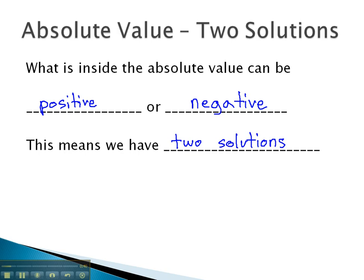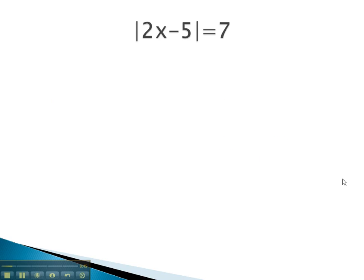Let's take a look at an example where we see this work out. In this problem, notice we have 2x minus 5 inside the absolute value. This means it could be positive or negative 7. Let's make two equations to show this. The 2x minus 5 could be positive 7, and the 2x minus 5 could be negative 7.